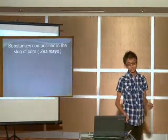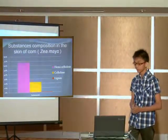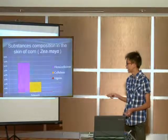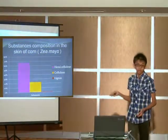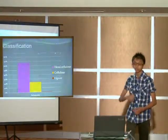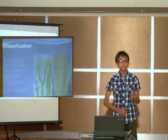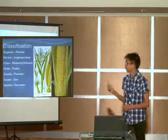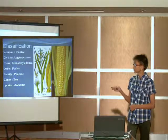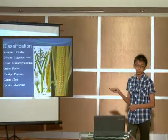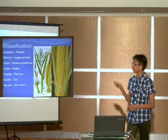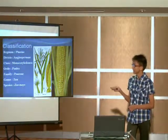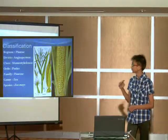You can see at the display, this is the substance composition in the skin of corn. There are hemicellulose, cellulose and lignin. This is the scientific classification of corn: Kingdom Plantae, Phylum, Division, Angiosperm, Class Monocotyledon, Order Poales, Family Poaceae, Genus Zea, and the species Zea mays.